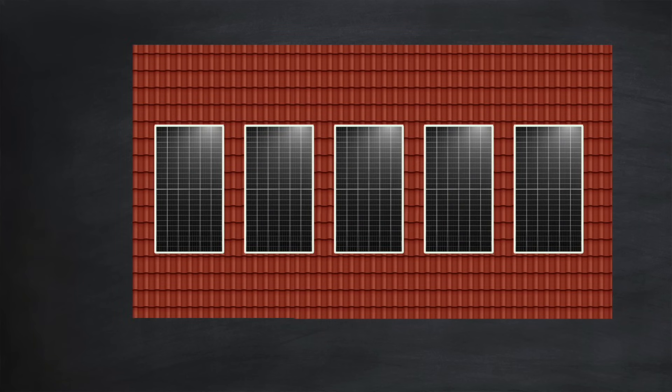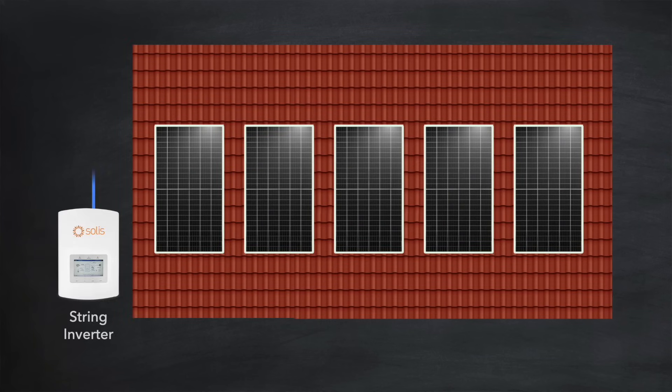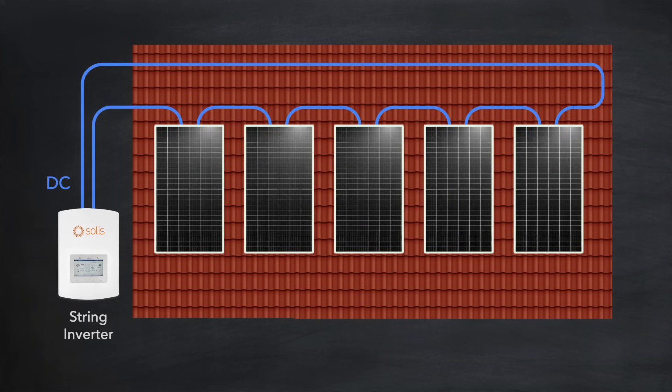This can be achieved with a string inverter, which connects to all the panels in series. A string inverter will optimize the voltage of that string so as to maximize the current through the panels, and therefore the DC power output. This DC is then converted to AC and injected into the AC circuit of the home.